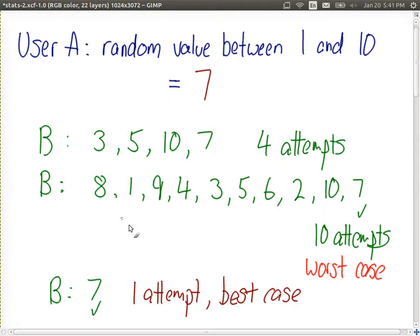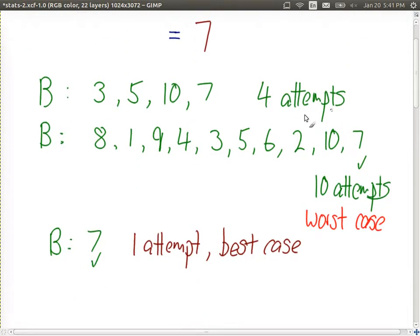Of course, B may choose in different order. And if we repeat this experiment multiple times, in the first experiment they took 4 attempts, the second one 10, the third one one attempt, and we keep going, on average, the number of attempts that B is going to take is 5. That's the average case.